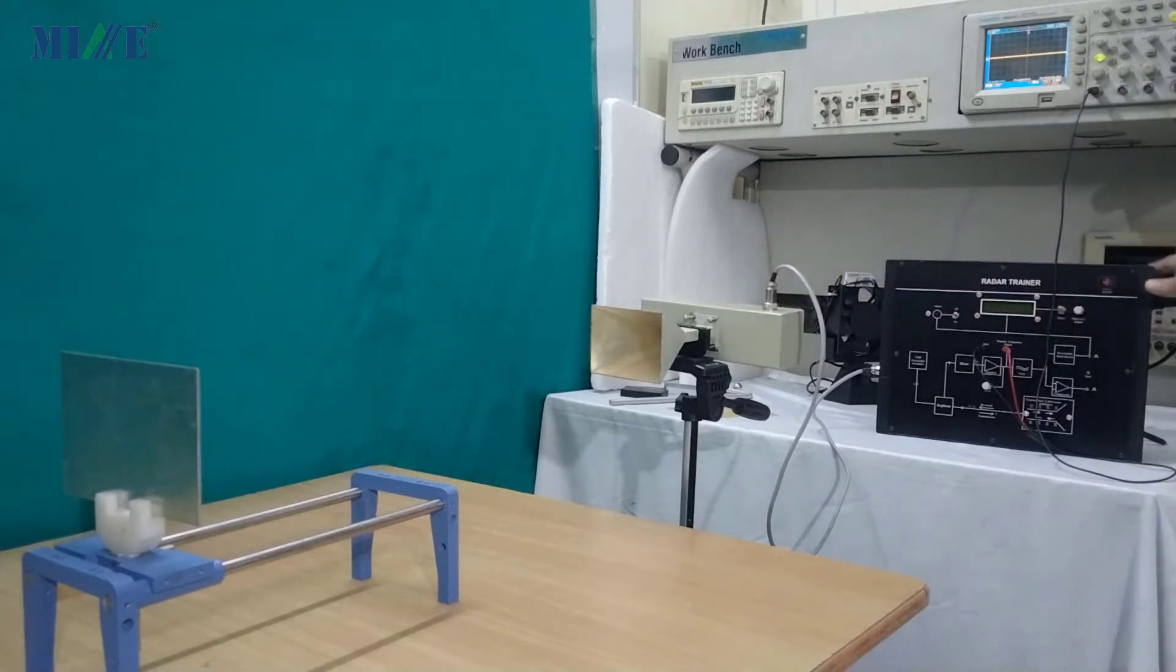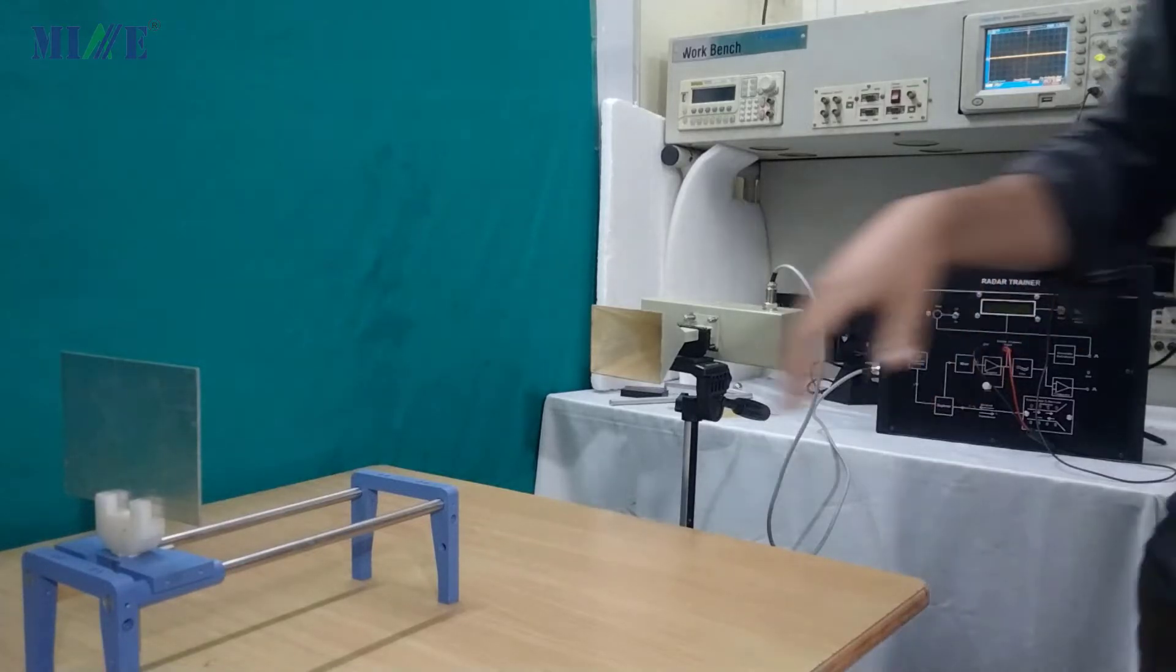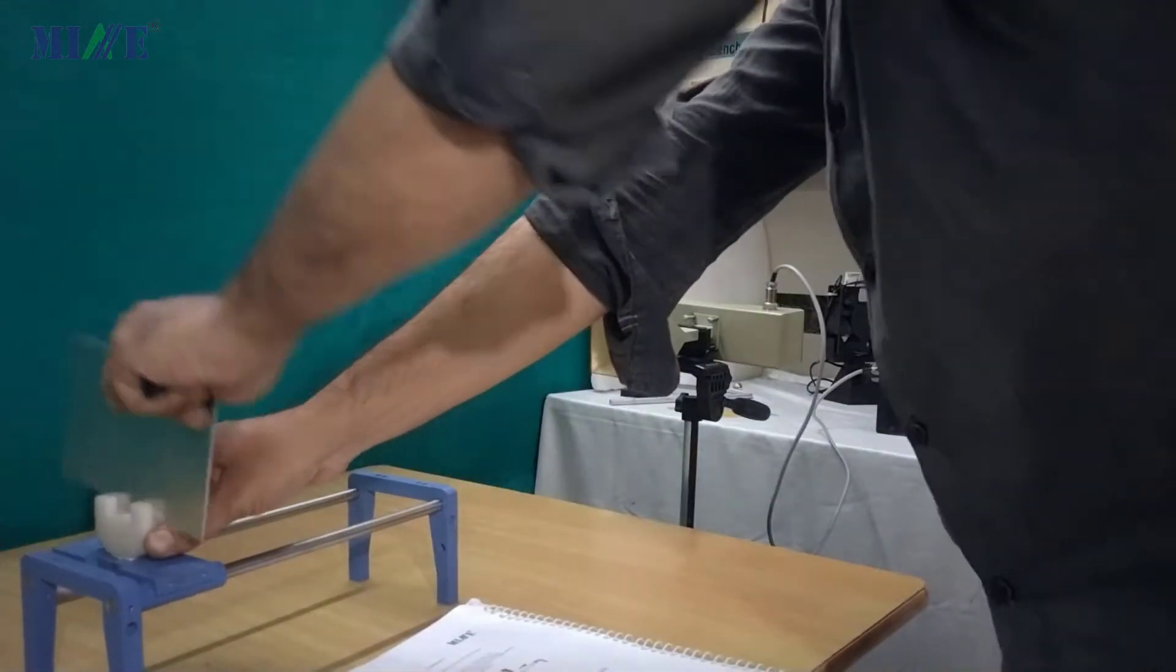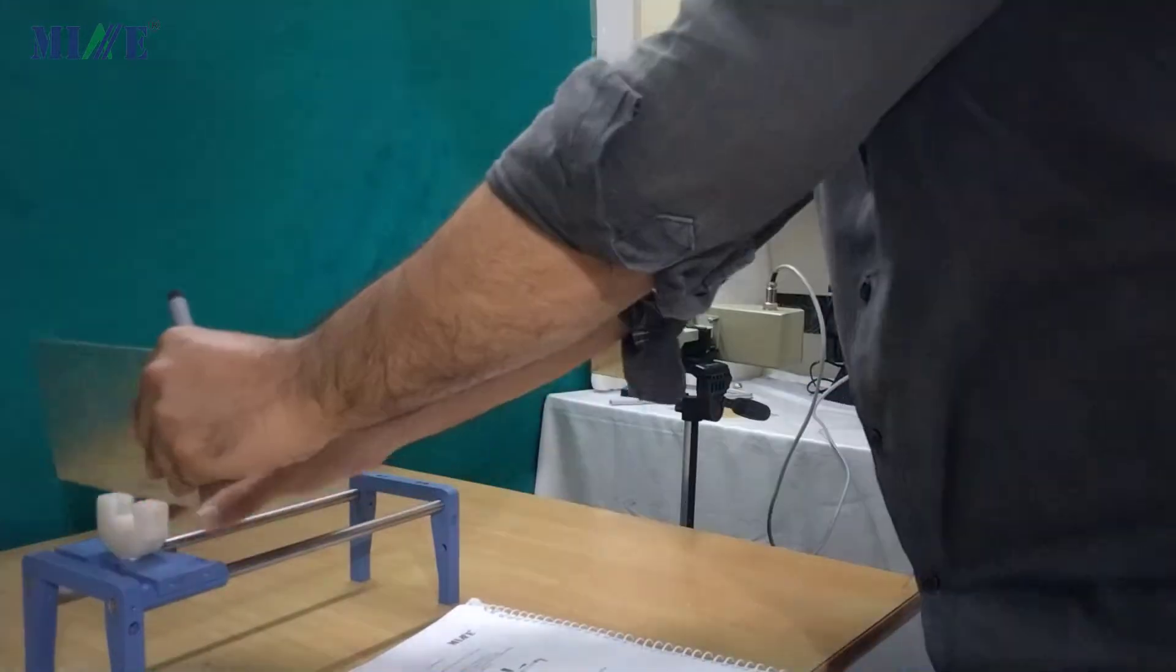You can see radar controlling unit. We are using DSO for measuring purpose. Also we have a sliding platform, a metal plate is used as a moving object. We will place this metal plate on sliding platform.